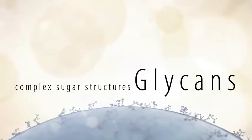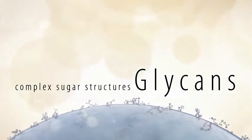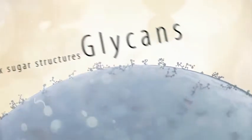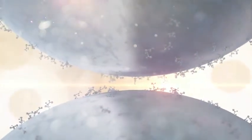Complex sugar structures called glycans cover almost every cell in our body and provide the network that allows cells to communicate their every need.